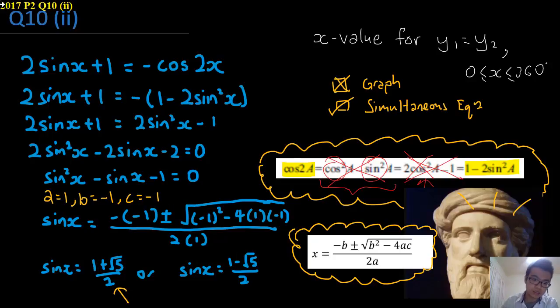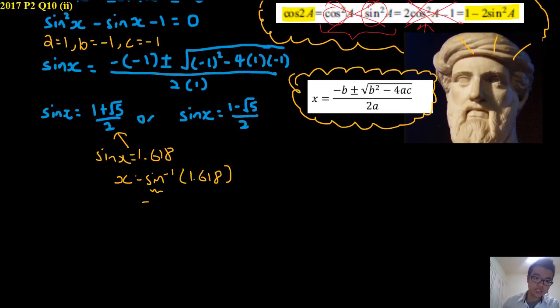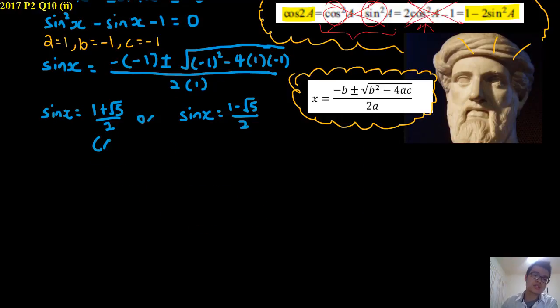And since this will give you 1.618, which doesn't make sense. If you inverse sine, you'll get an error. So we just reject this actually. And from here, the rest is clear.